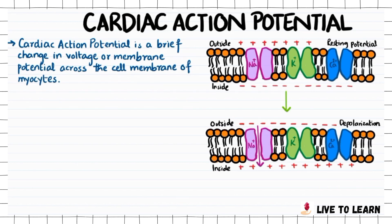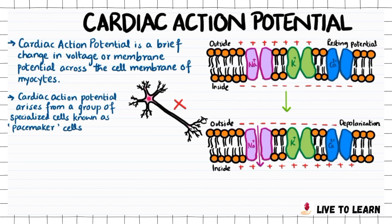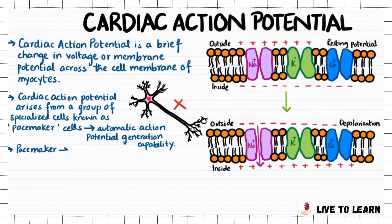Unlike the action potential in skeletal muscle cells, the cardiac action potential is not initiated by nervous activity. Instead, it arises from a group of specialized cells known as the pacemaker cells that have automatic action potential generation capability. These cells are found in the sinoatrial node in the right atrium and they produce roughly 60-100 action potentials every minute.